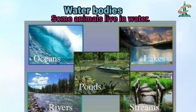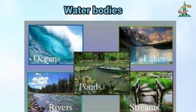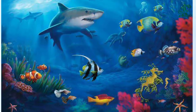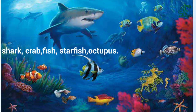Some animals live in water like oceans, ponds, rivers, lakes, and streams، اور یہ water bodies کہلاتی ہیں۔ جو animals پانی میں رہتے ہیں، ان کی habitat water bodies ہوتی ہے۔ Like shark, crab, fish, starfish, octopus, etc.